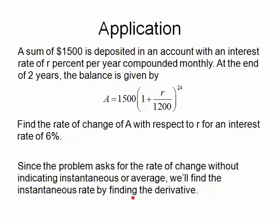So we're going to have to find the derivative dA over dr, and once we're done, we're going to plug in r equals 6%. So I want to emphasize here, if they want you to find an average rate of change, they'll always say the word average. If they leave it out, you should assume that it's instantaneous.